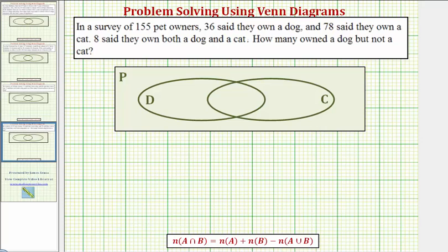Let's begin by determining where we would find those that owned a dog but not a cat. Those that owned a dog must be in set D, but if they also don't own a cat, they'd have to be in this region here. So our goal is to determine how many elements are in this set.